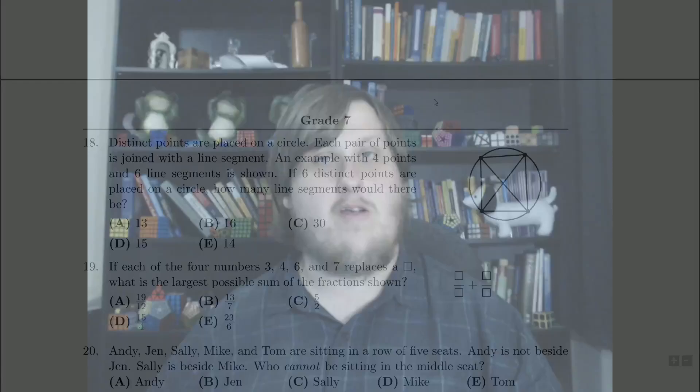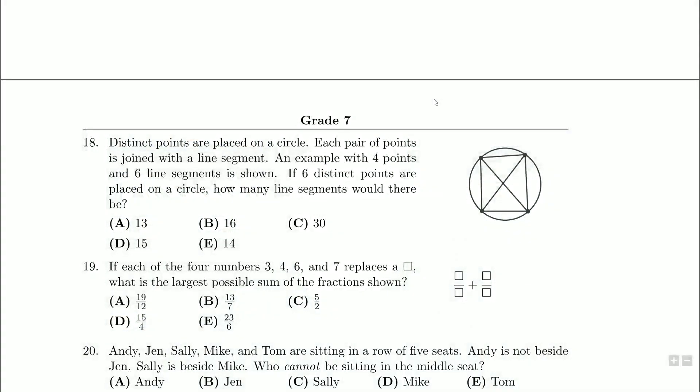We'll be looking at question number 18 on our Gauss paper. So what have we got? Distinct points are placed on a circle. Each pair of points is joined with a line segment.